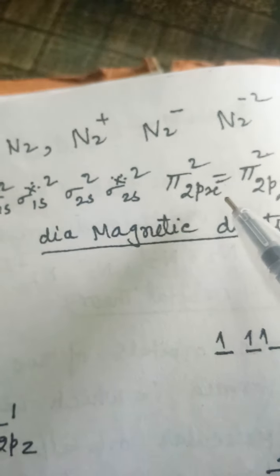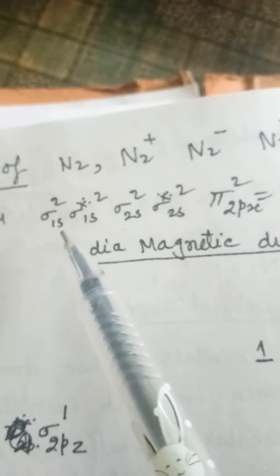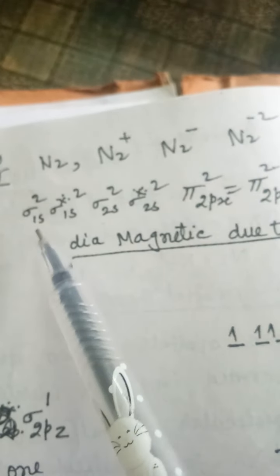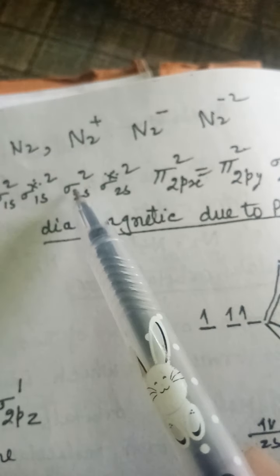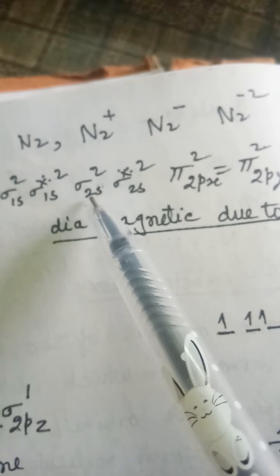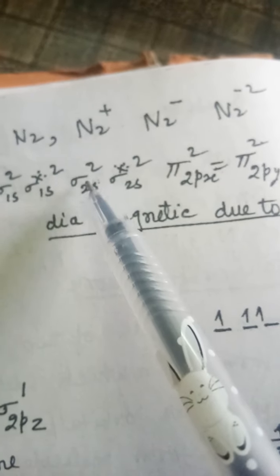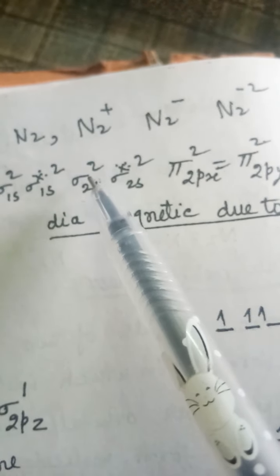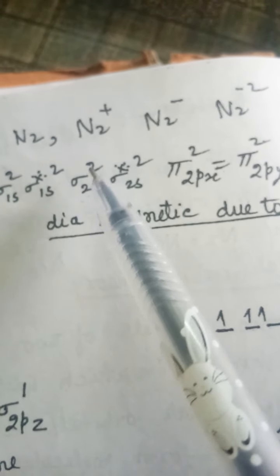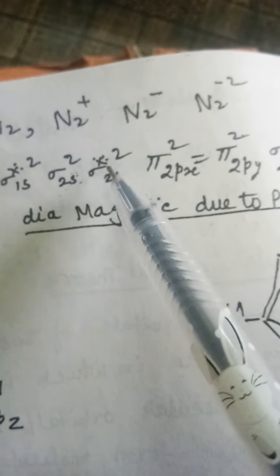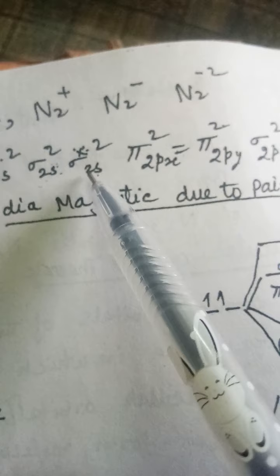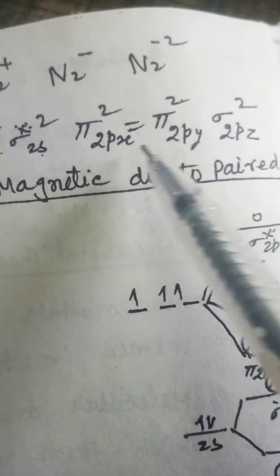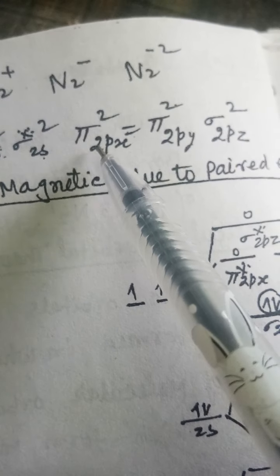Here is the order of the molecular orbitals depending upon energy. The energy of sigma 1s — this is the sigma bonding molecular orbital. This is the sigma anti-bonding molecular orbital. Then sigma 2s: when the 2s atomic orbitals of the two nitrogen atoms combine together, it gives a sigma molecular orbital designated as sigma 2s. This is the anti-bonding molecular orbital formed by the linear combination of the 2s atomic orbital. After this comes the energy of the bonding pi molecular orbital — pi 2px.